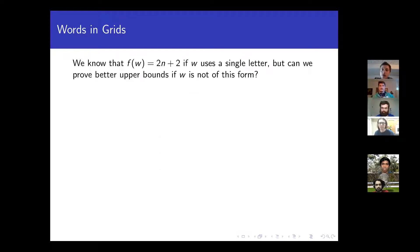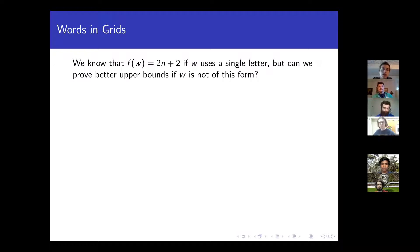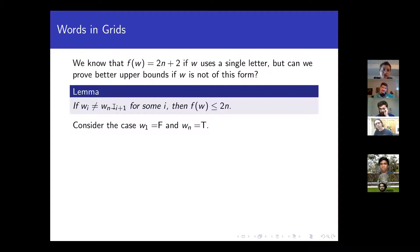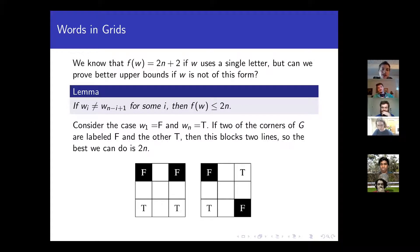Let me talk about some more general results, some of which I found rather surprising. We know it's possible for a word to have 2N plus 2 copies, but this should only really happen for the constant word. One seemingly weak upper bound: if the I-th letter is different from the opposite letter — for example, the first letter differs from the last letter — then you can prove a bound of 2N instead of 2N plus 2. We'll address whether that's actually a good bound later on.